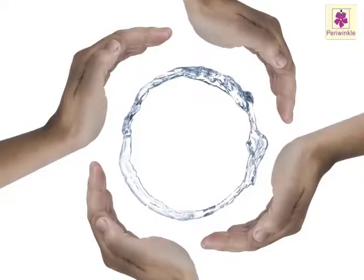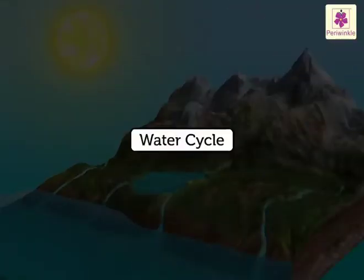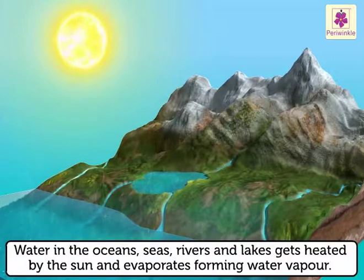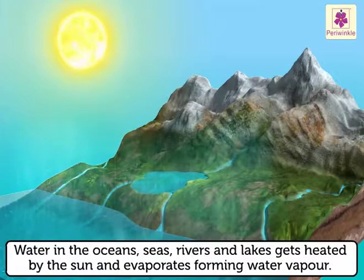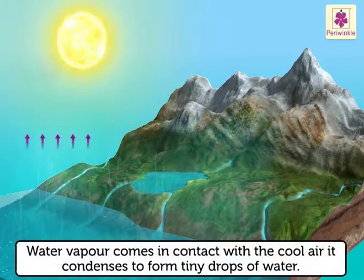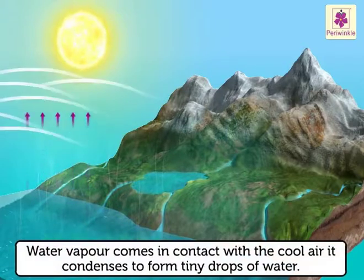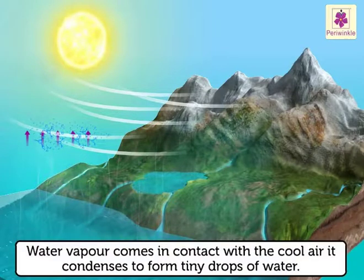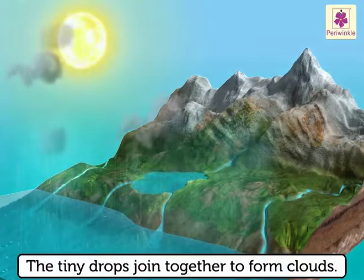Water is a limited resource and so it is important to conserve it. In the water cycle, water in the oceans, seas, rivers and lakes gets heated by the sun and evaporates, forming water vapor. This water vapor rises up. When this water vapor comes in contact with the cool air, it condenses to form tiny drops of water.